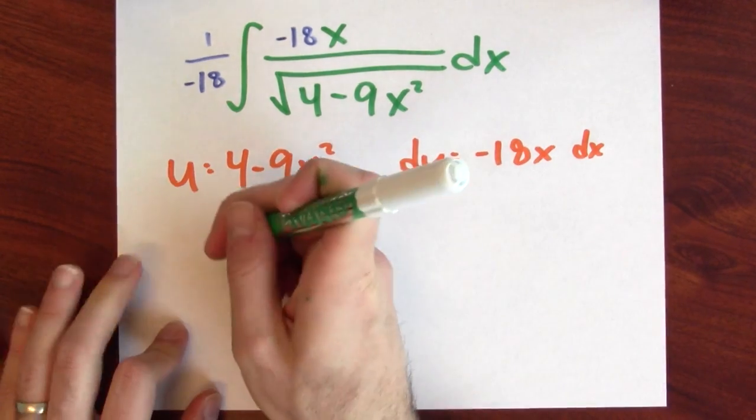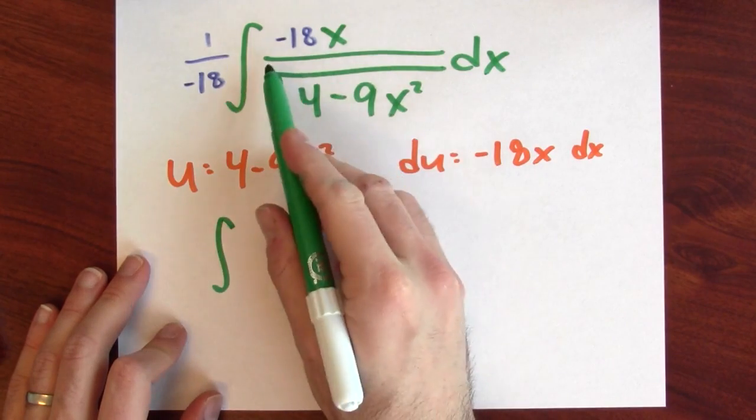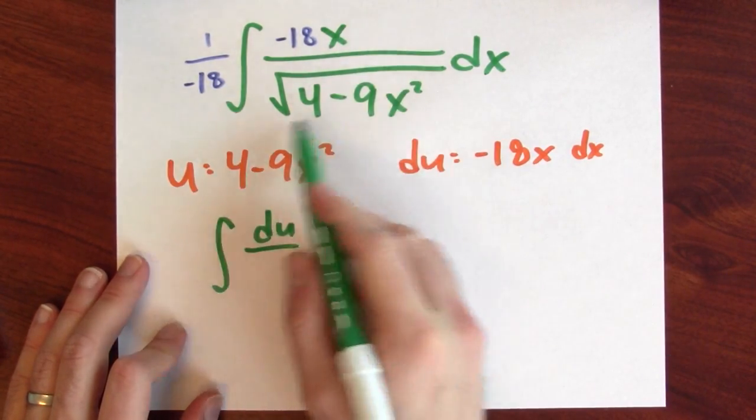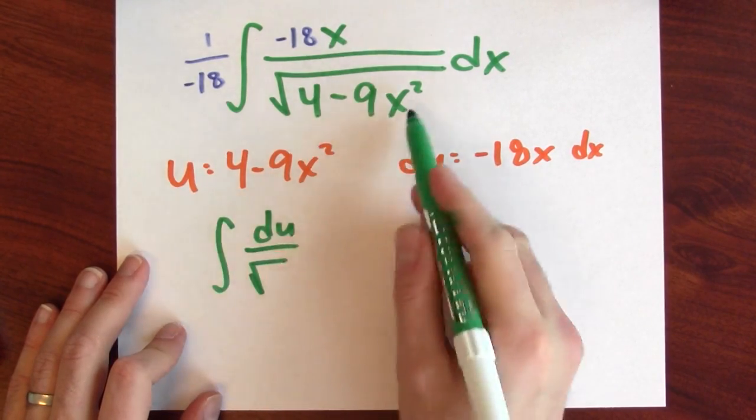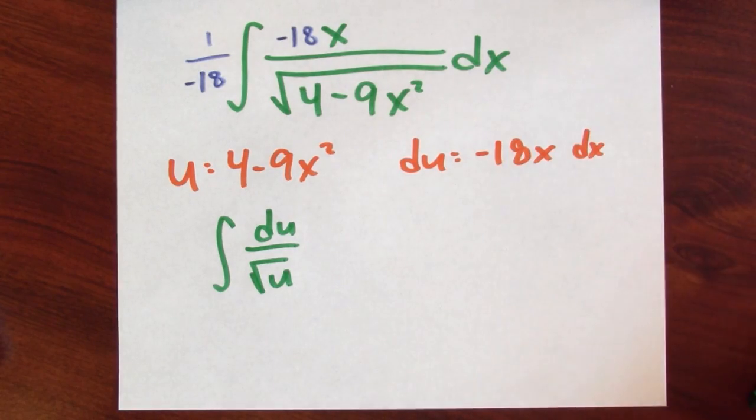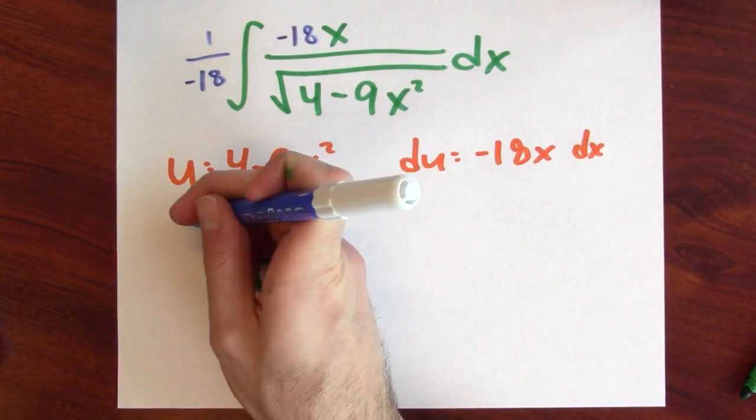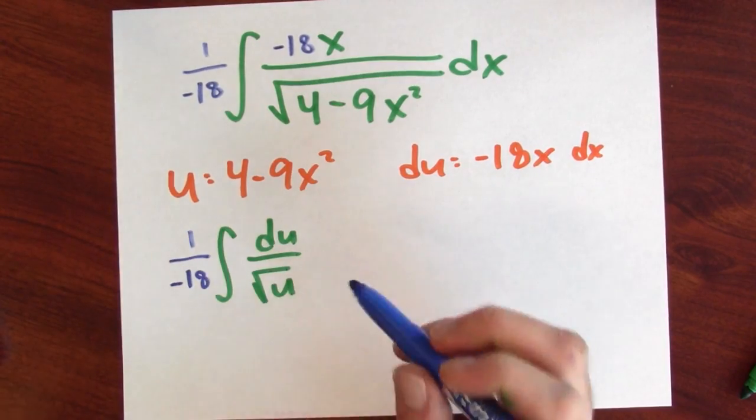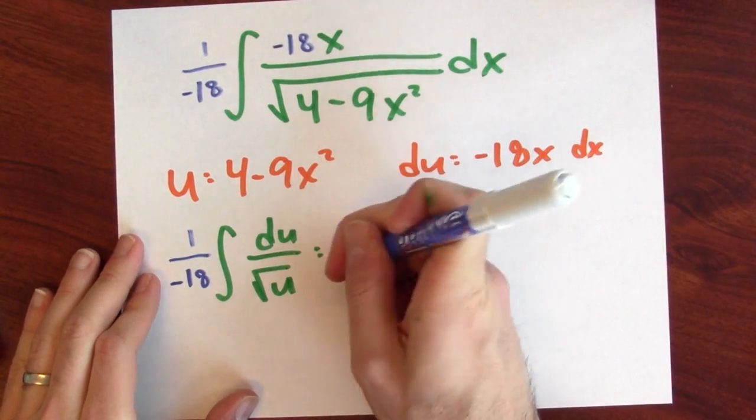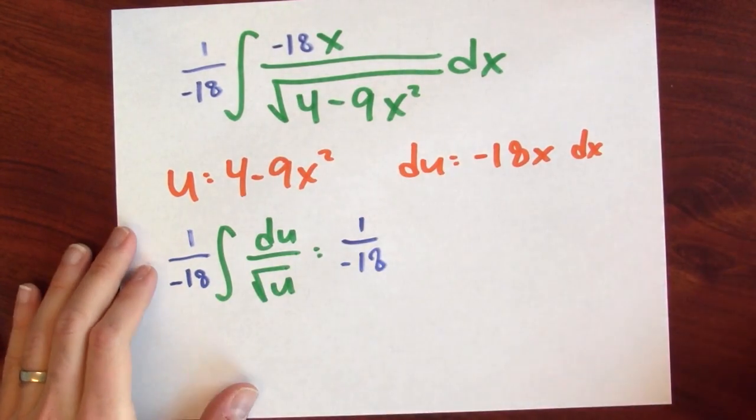So let's make that substitution. This is now, well, the numerator is now just du. And the denominator is the square root of u. And I want to make sure to include the 1 over negative 18 in front. And that integral I can do with the power rule.